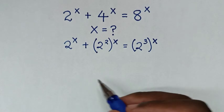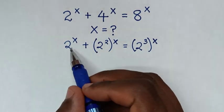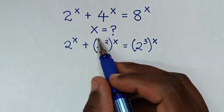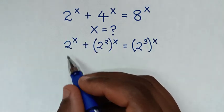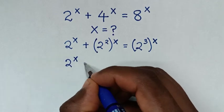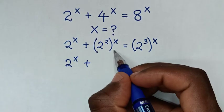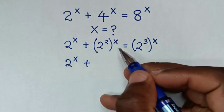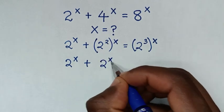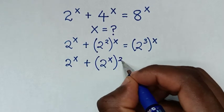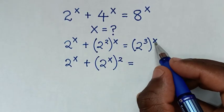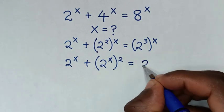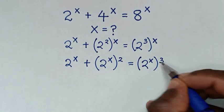In the next step we make all terms have the same exponent of 2 power x. Here we have 2 power x and here 2 power x. So for the middle term, we take power of x inside and power of 2 outside the bracket, giving 2 power x bracket power 2. And for the right side, power of x inside and power of 3 outside, giving 2 power x bracket power 3.